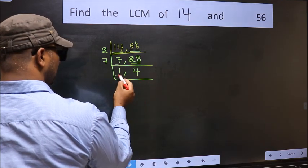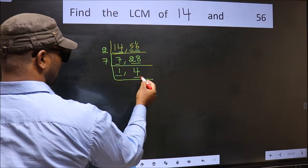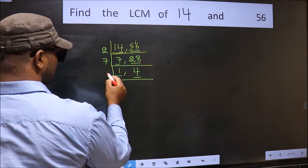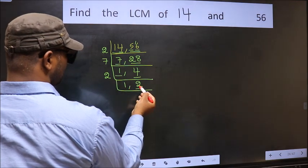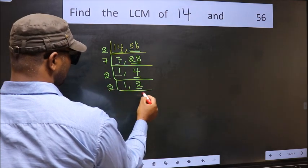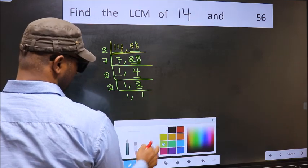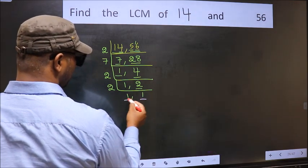Now we got 1 here, so focus on the other number 4. 4 is 2 times 2 is 4. Now we have 2. 2 is a prime number, so 2 times 1 is 2. So we got 1 in both the places.